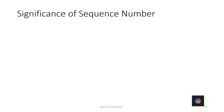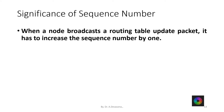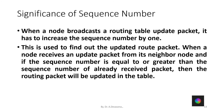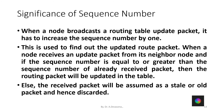Significance of sequence number: When a node broadcasts a routing table update packet, it has to increase the sequence number by 1. This is used to find out the updated route packet. When a node receives an update packet from its neighbor node and if the sequence number is equal to or greater than the sequence number of the already received packet, then the routing packet will be updated in the table. Also, the received packet will be assumed as a stale or old packet and hence discarded.